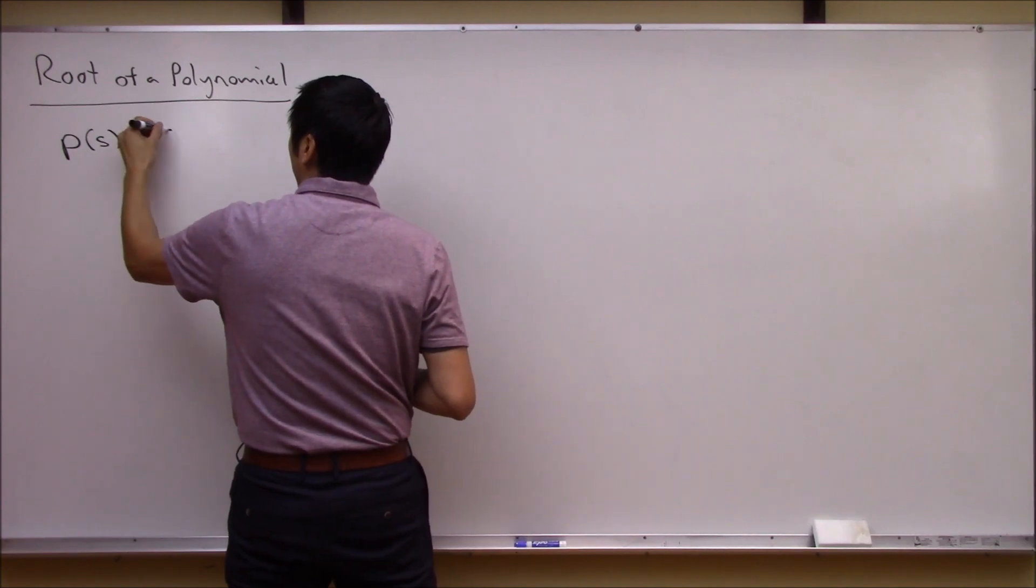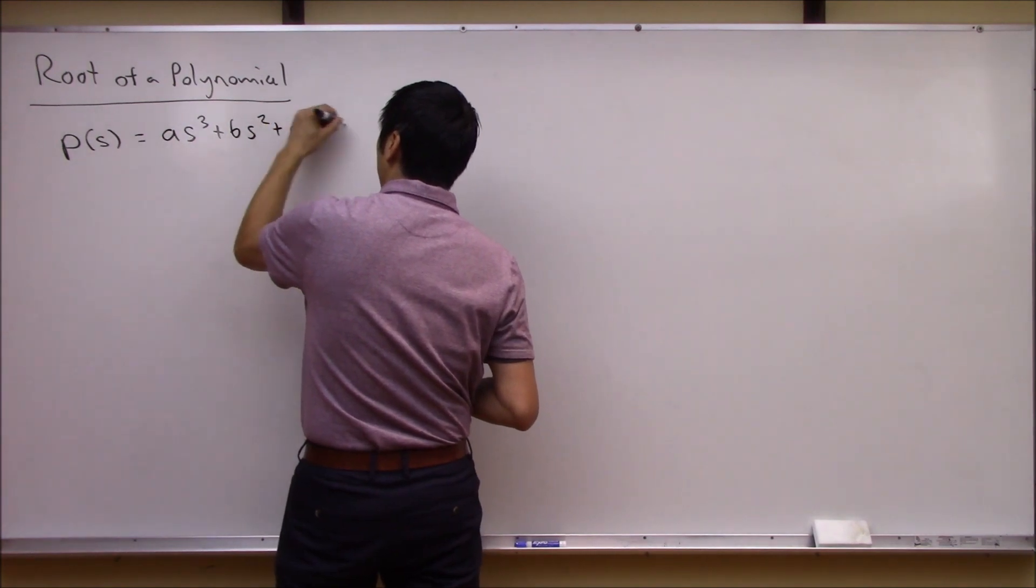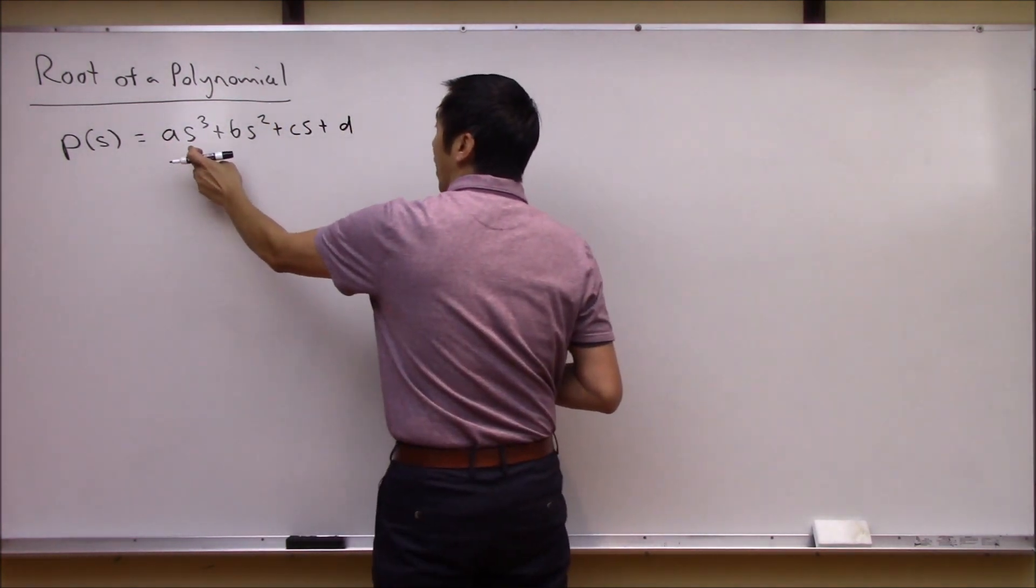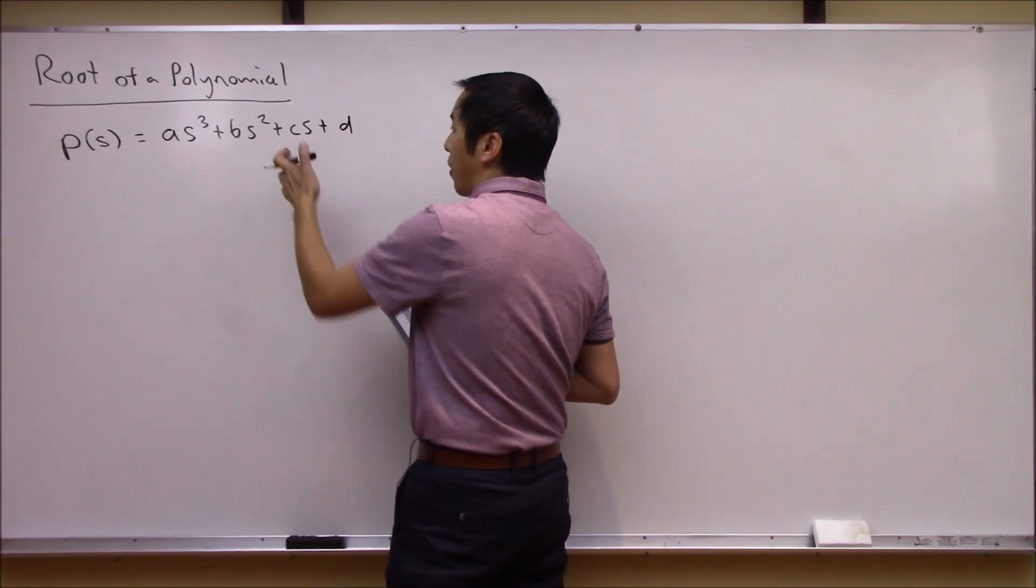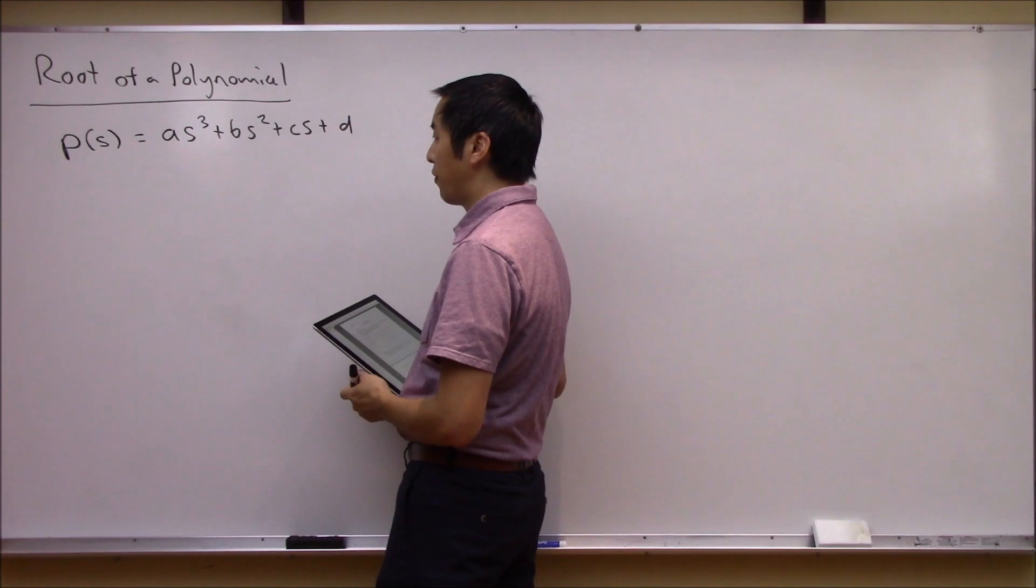So in other words you could have something like a*s^3 + b*s^2 + c*s + d here, where a, b, c, and d are constants and then these s's and their associated powers make up the polynomial. This is a general definition of a polynomial.